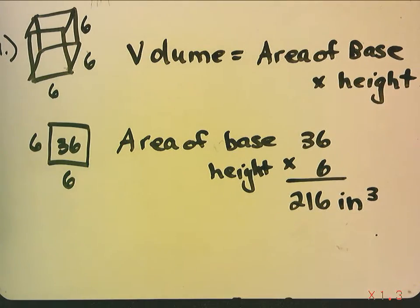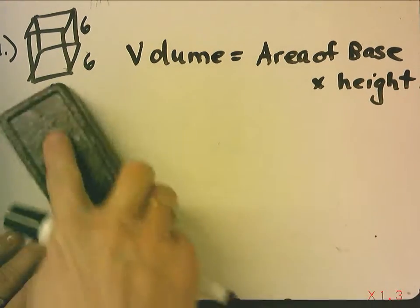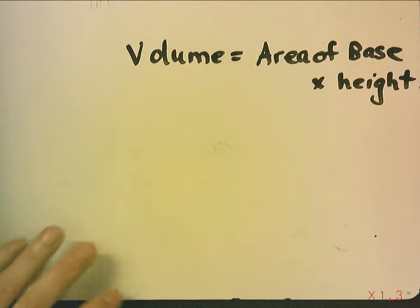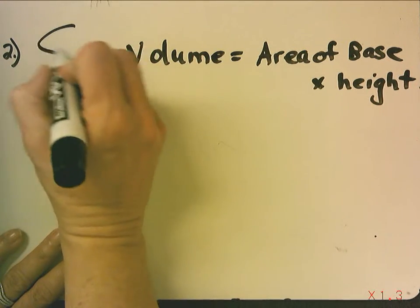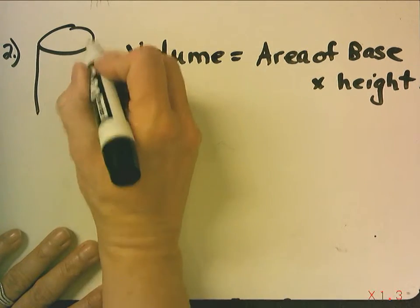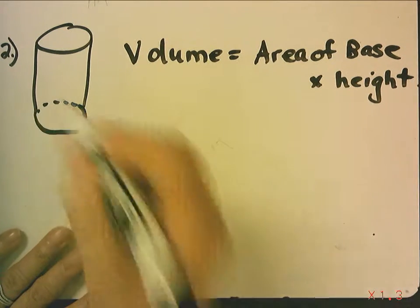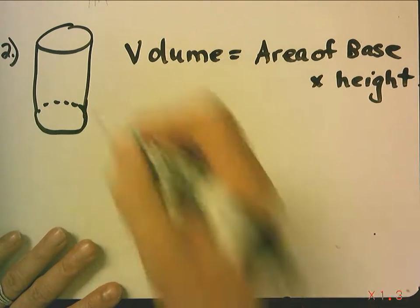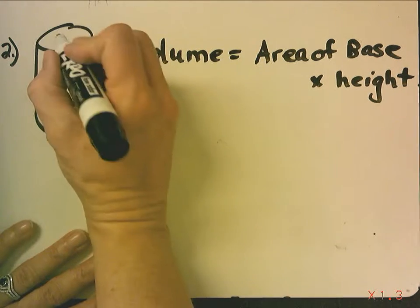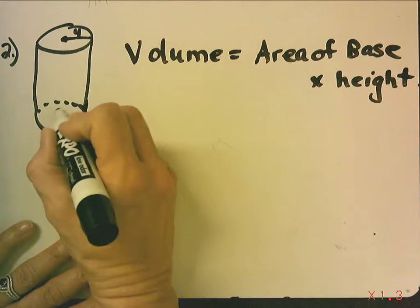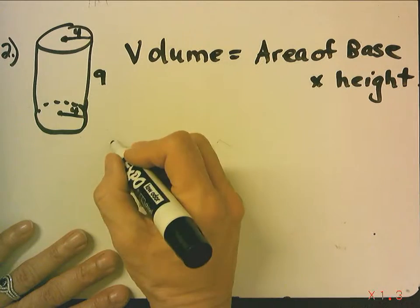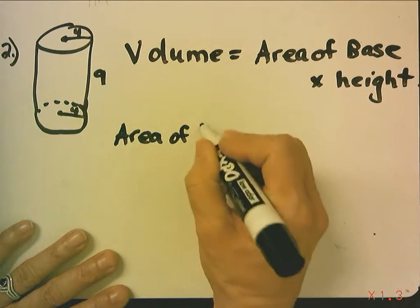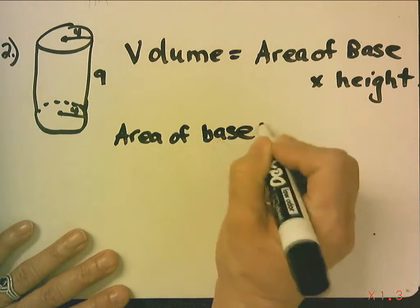It's area of the base times the height. Now, we're going to do number 2 and find that for cylinders, it's the same formula as it is for prisms. A cylinder is not a prism because it has a rounded edge, but we are still going to find the area of the base times the height. Now, in this case, the area of the base is the area of a circle.